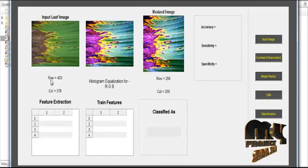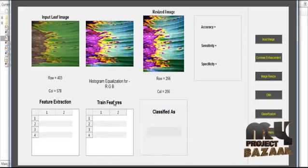Before the resize, the number of rows will be 403 and number of columns will be 578. After the resize, the row and column will both be 256.